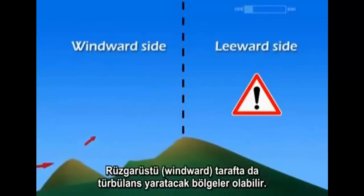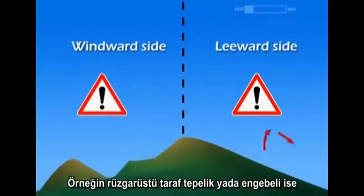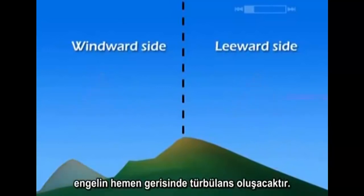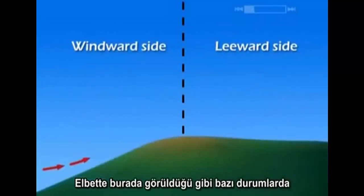There may also be areas of the windward side where turbulence occurs. For instance, if the windward side is hilly or irregular, turbulence will form in the immediate vicinity of the obstacle.